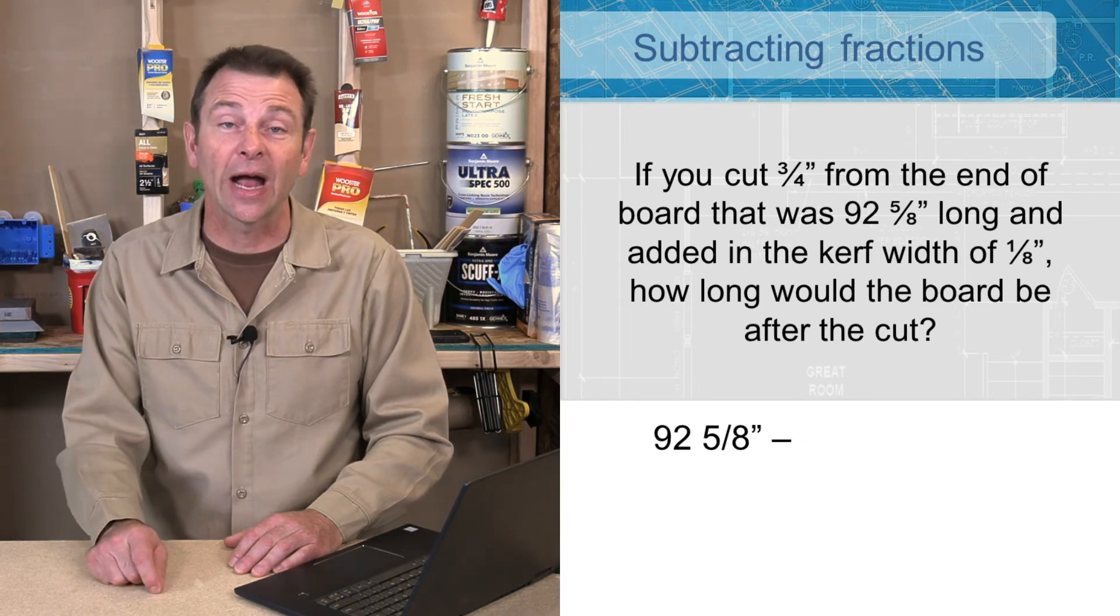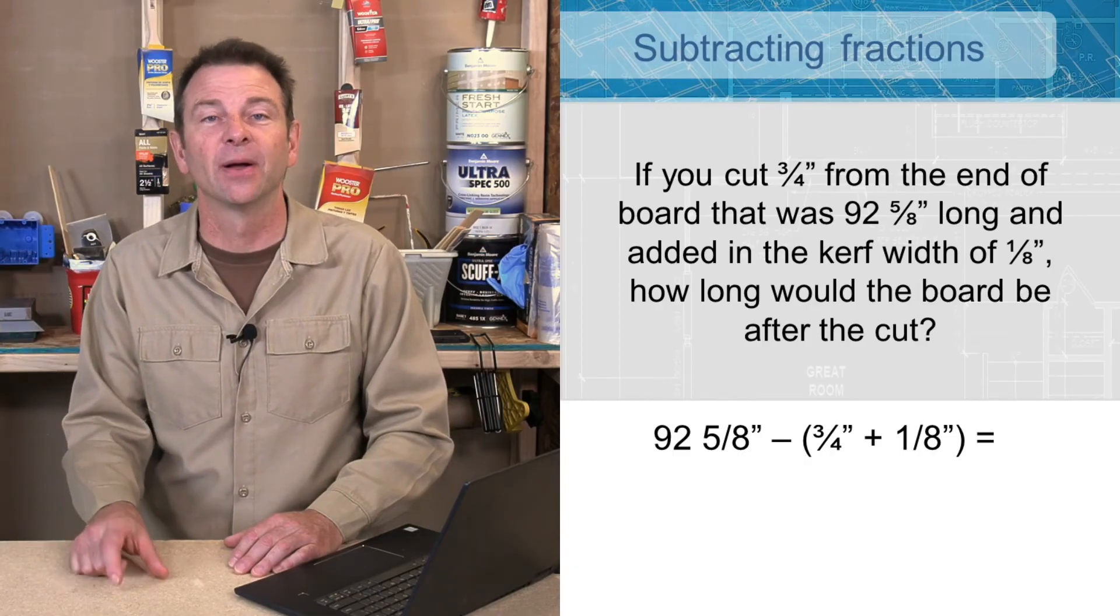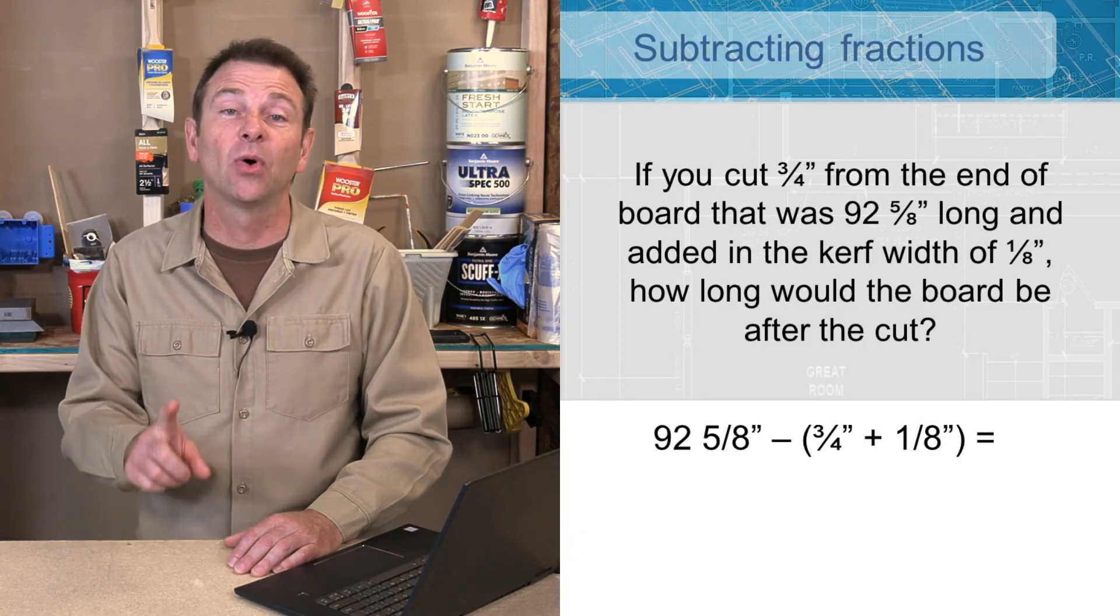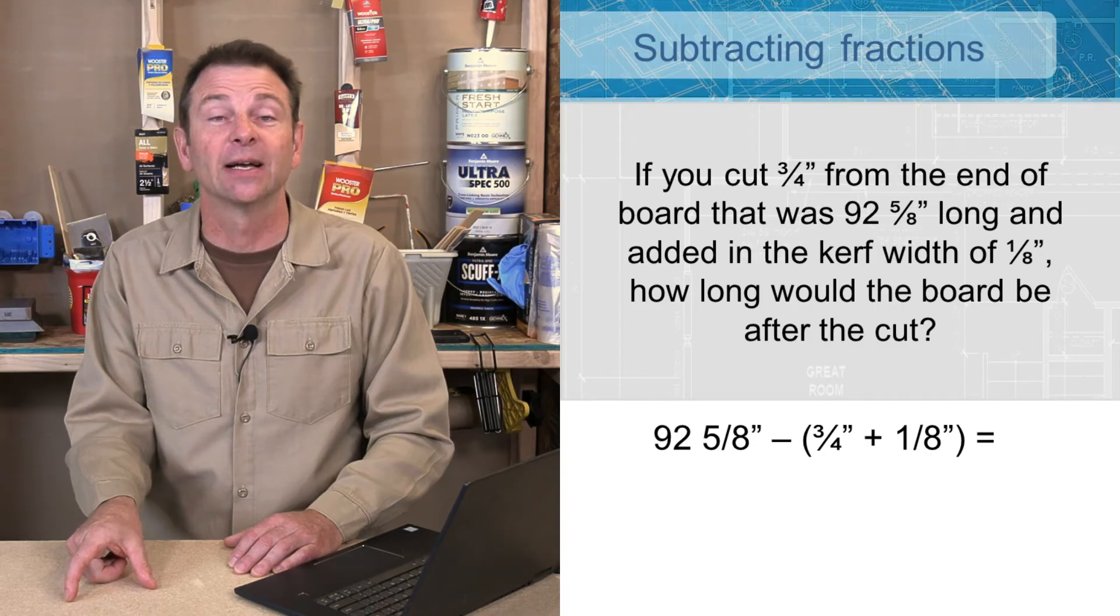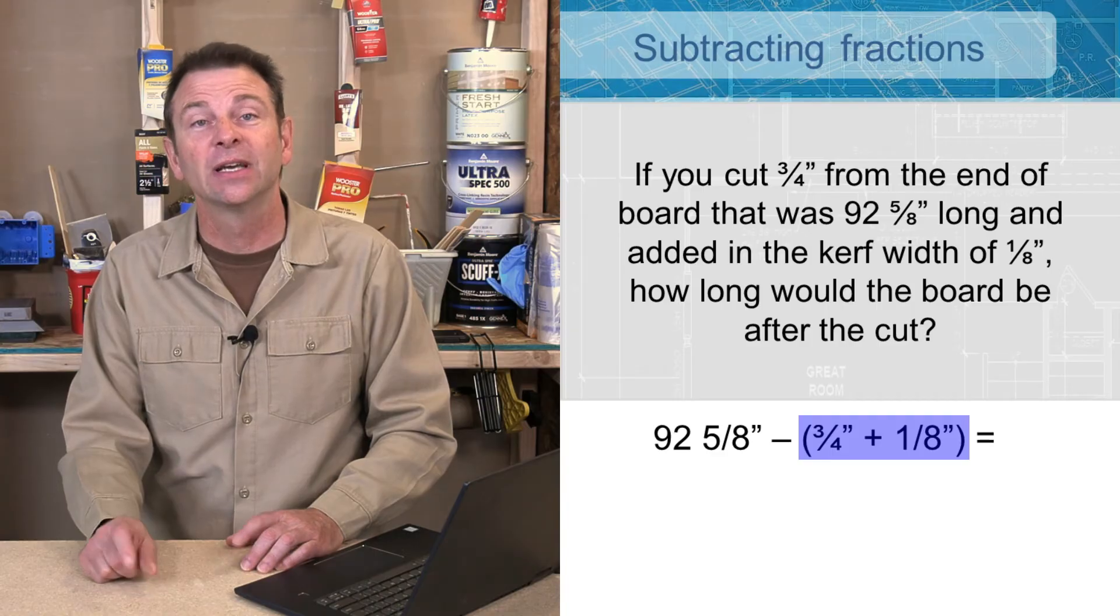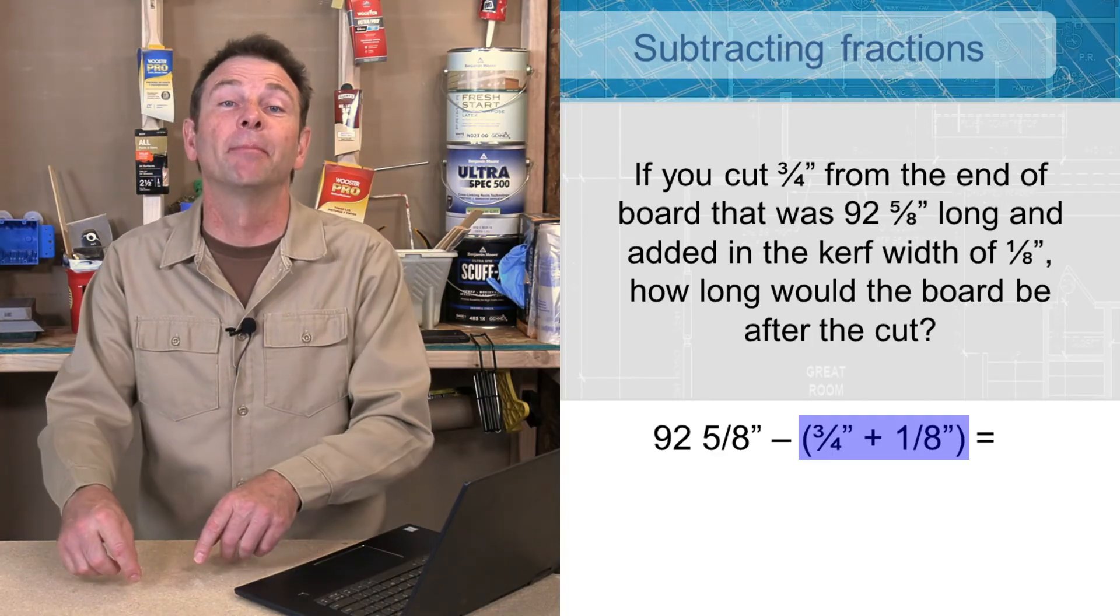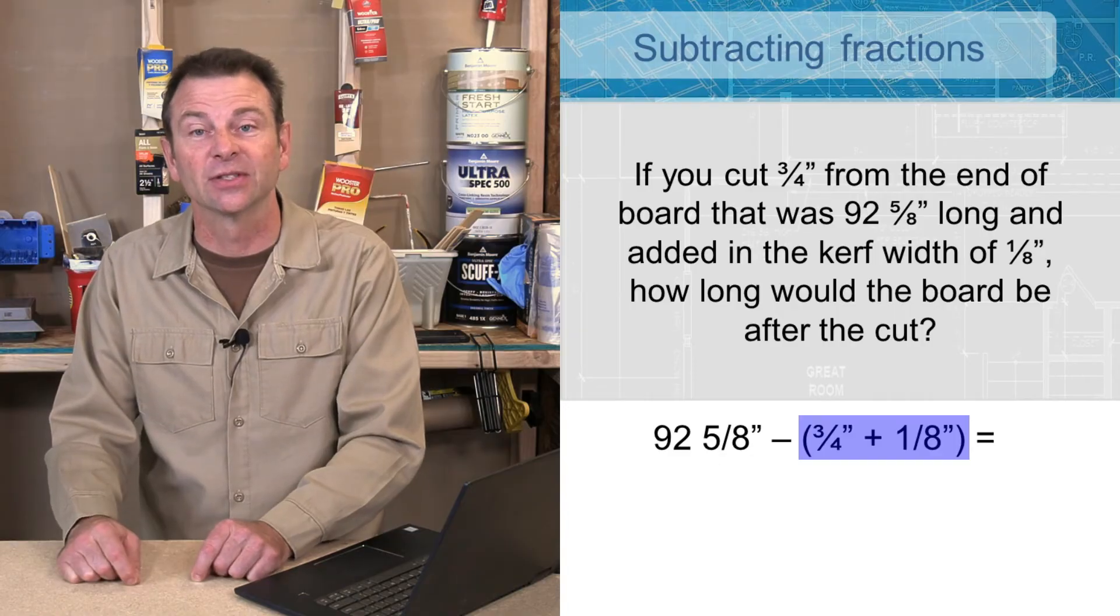And we want to subtract a 3/4 plus 1/8 dimension from that board. So first of all, I want to know what my total dimension I'm subtracting from the original length of the board. So I'm going to convert these fractions which do not have common denominators. I'm going to make them with common denominators on the bottom.